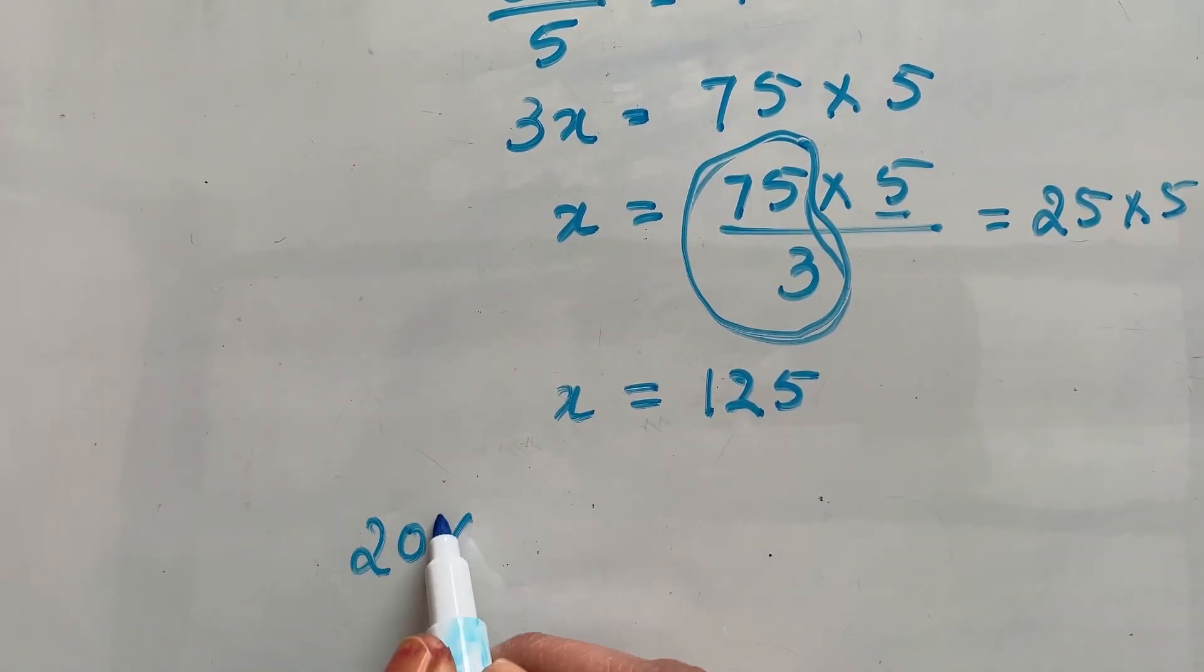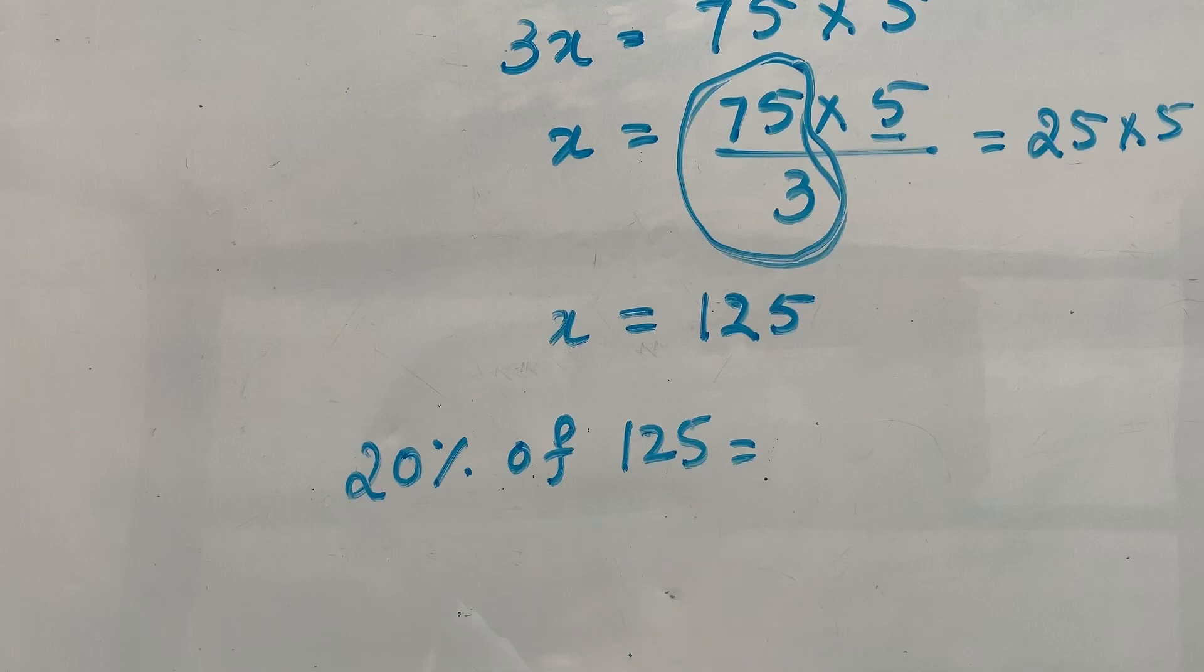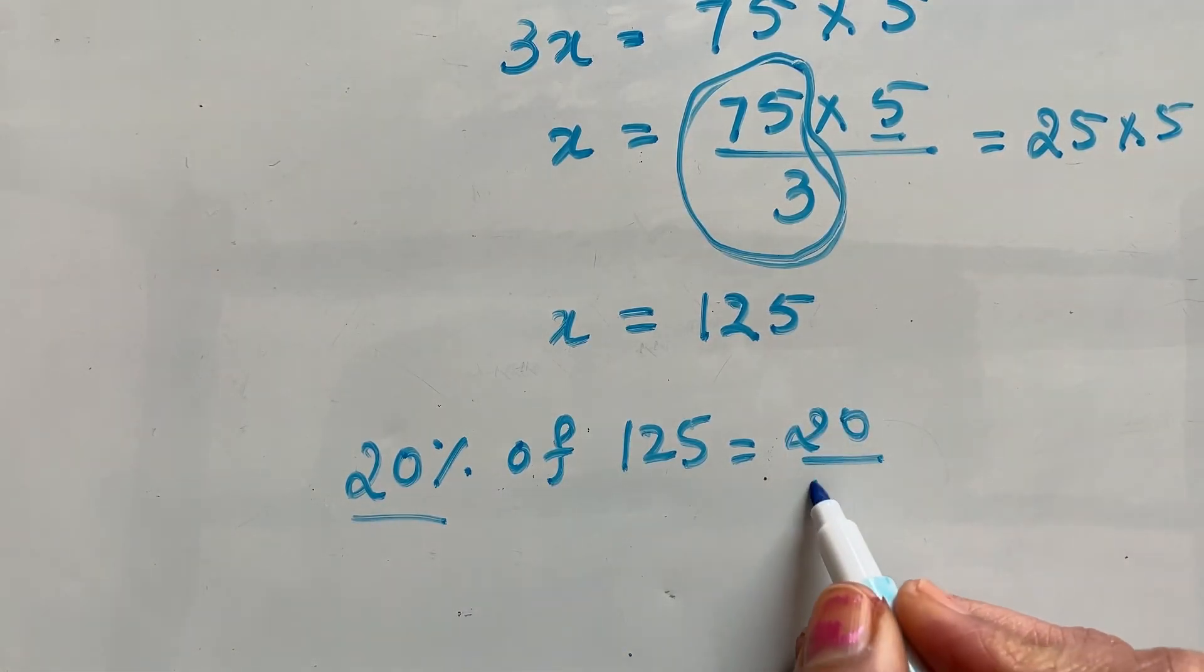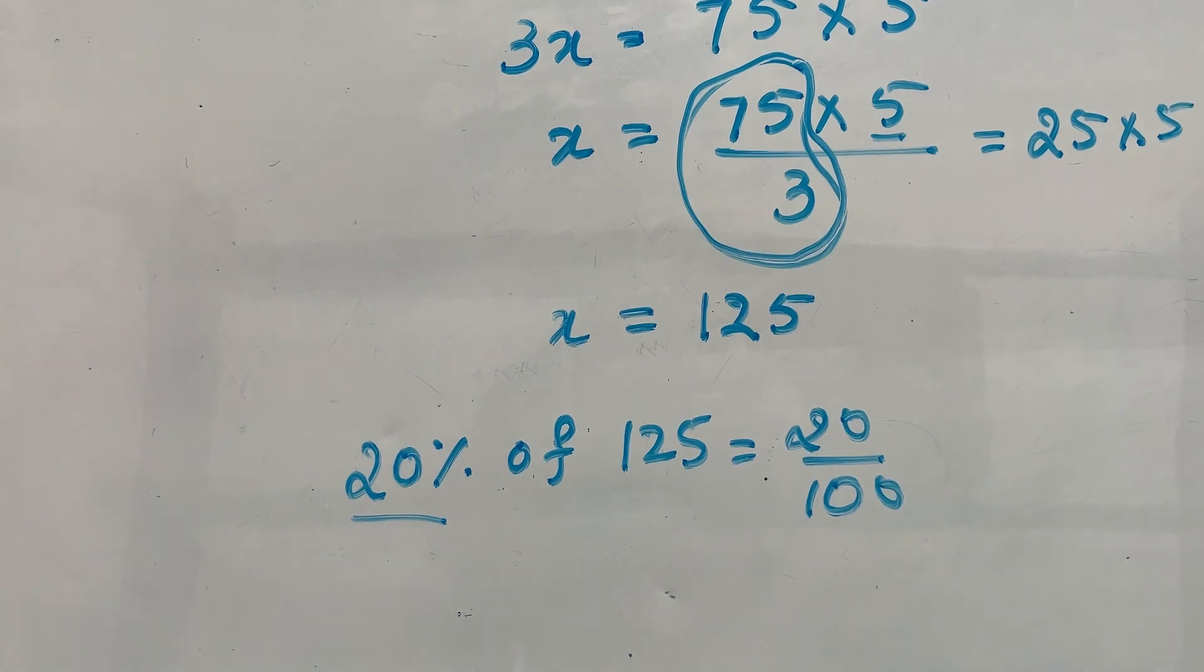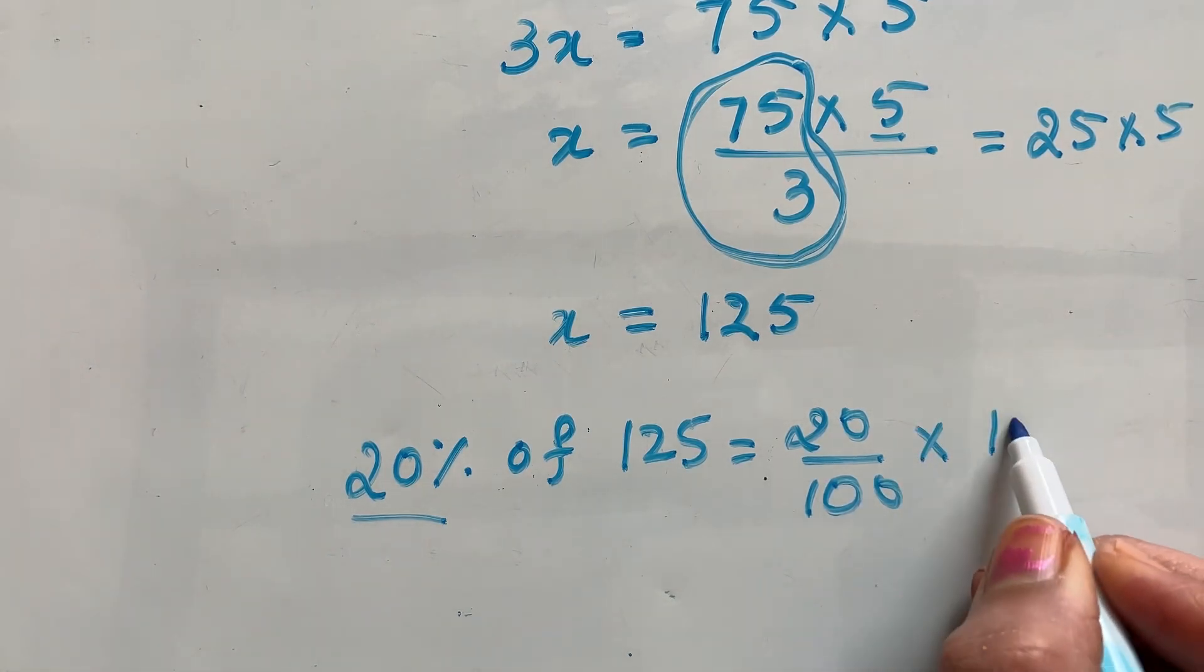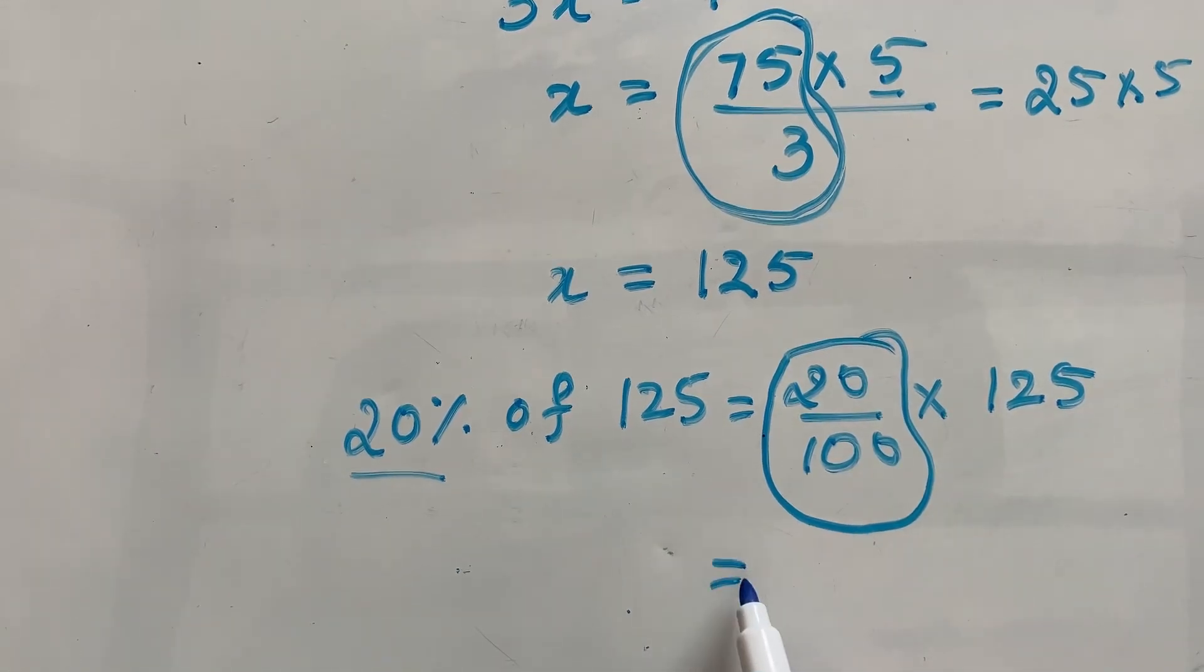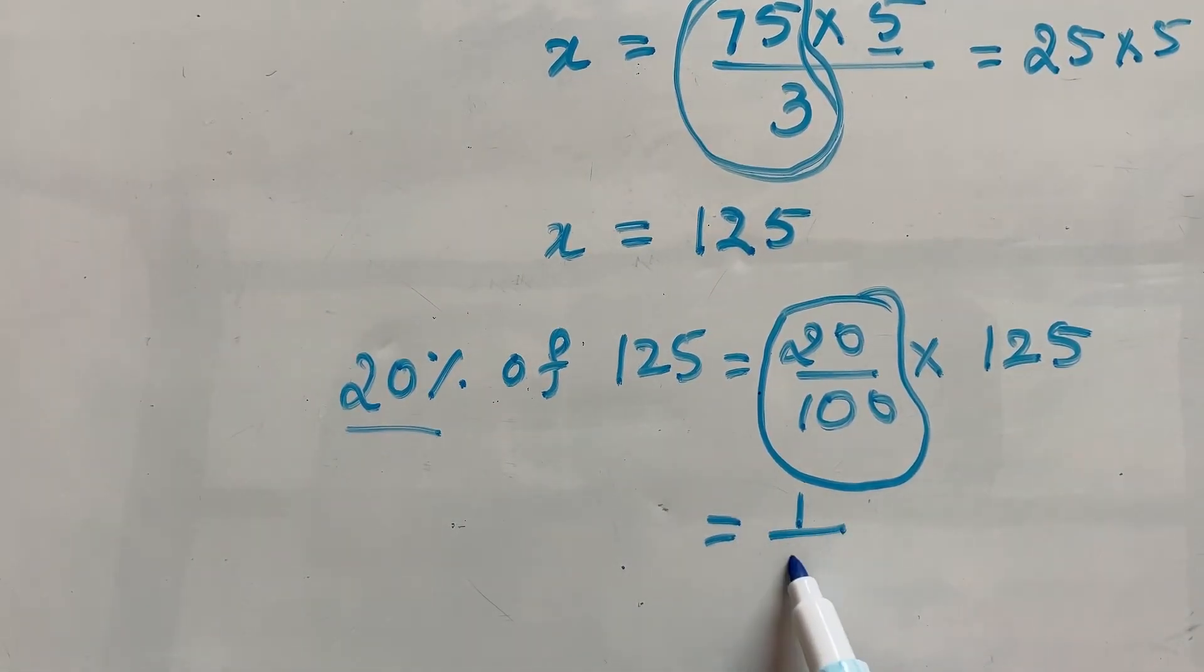So, 20% of 125. That is equal to 20% means 20 over 100 of 125.